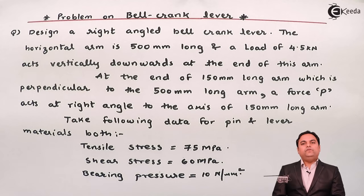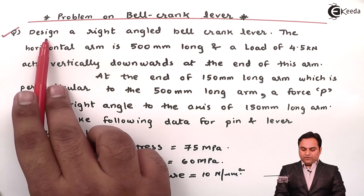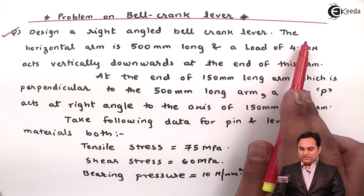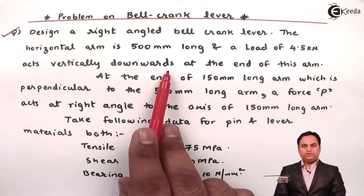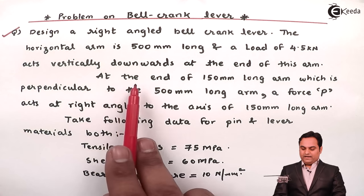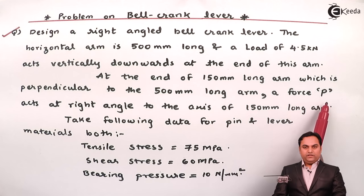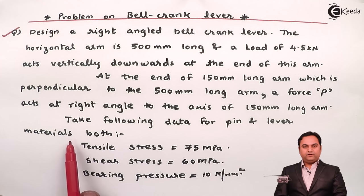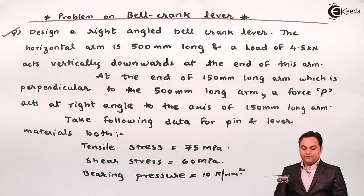In this video we will see a problem on bell crank lever. The question is: design a right angle bell crank lever. The horizontal arm is 500 mm long and a load of 4.5 kilonewton acts vertically downwards at the end of this arm. At the end of the 150 mm long arm, which is perpendicular to the 500 mm long arm, a force P acts at right angle to the axis of the 150 mm long arm. The material data for pin and lever: tensile stress is 75 MPa, shear stress is 60 MPa, and bearing stress is 10 N/mm².